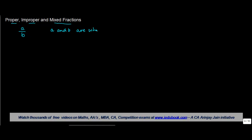A fraction is a number which can be written in the form A upon B, where A and B are whole numbers and B is not equal to 0. In mathematical terminology, we call A the numerator and B the denominator.